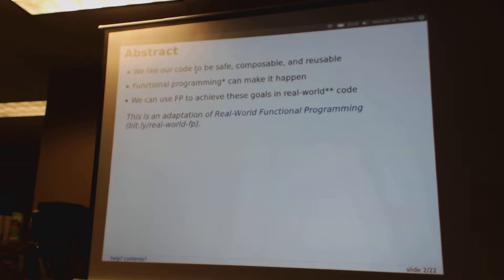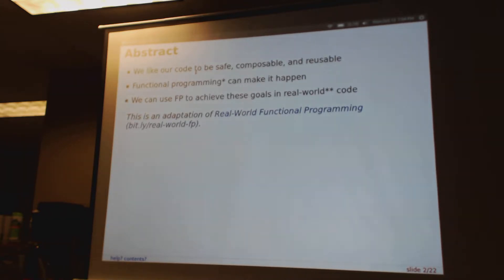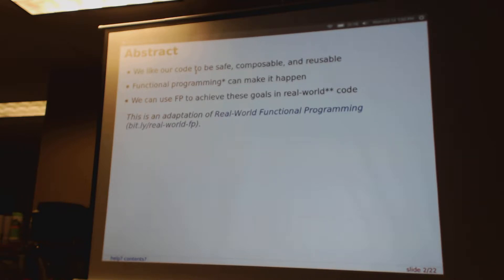The motivation behind all this is that there are all these cool characteristics of functional programming that are often promised. Things like making our code safe, or type safe. Composable — how do we put pieces of our code together from smaller components? Reusability — that's kind of the same idea. And I submit that functional programming can make all of these things happen. There's an asterisk there — I'm going to define what I mean by functional programming on the next slide.